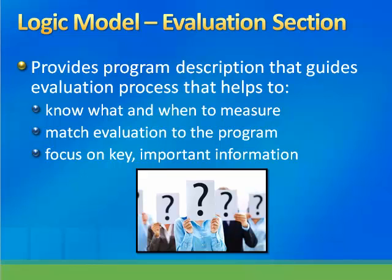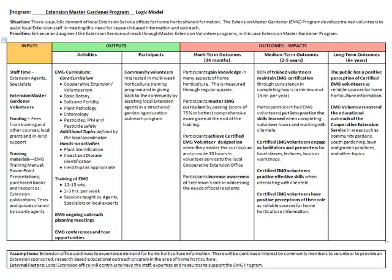Let's review two examples of completed logic models. In this example of an Extension Master Gardener program logic model, both the situation and priorities highlight the public demand for horticulture information and the development of a trained volunteer group to assist Extension agents in the community in the area of gardening education. For inputs, four are noted, including staff, volunteers, funds, and materials. For output activities, four are noted, including curriculum, volunteer training, volunteer planning meetings, and volunteer professional development activities. For output participants, community volunteers are listed.